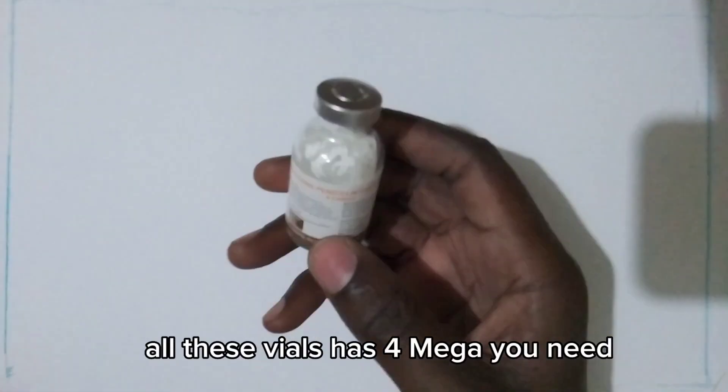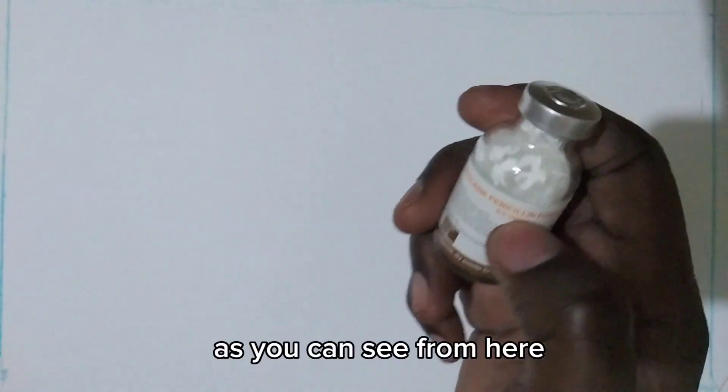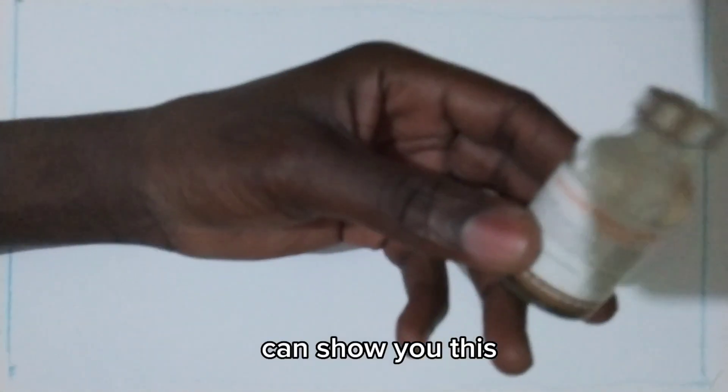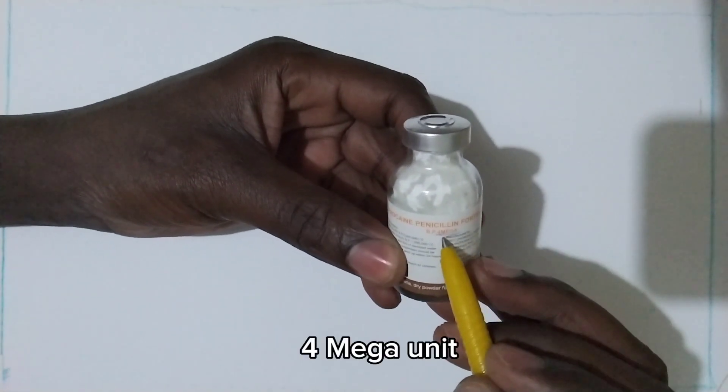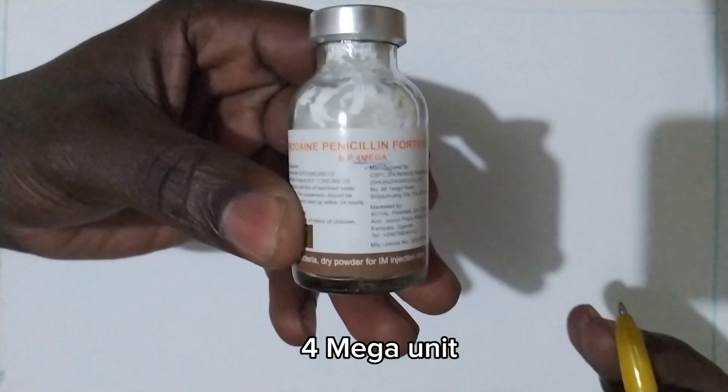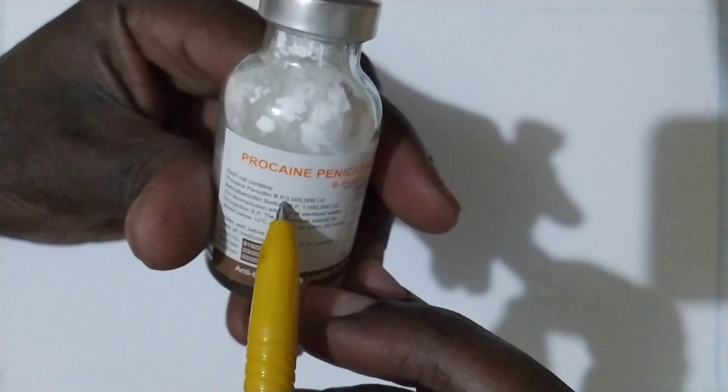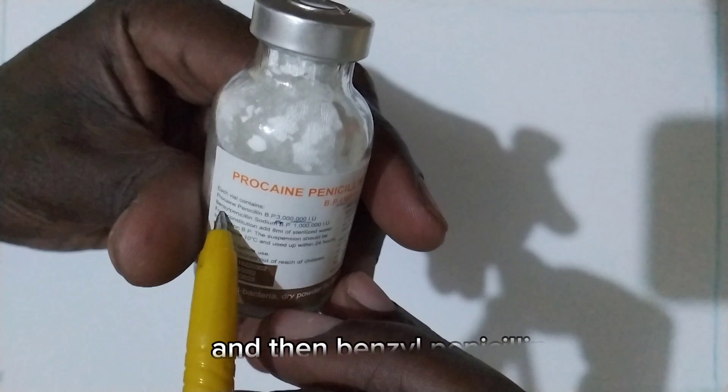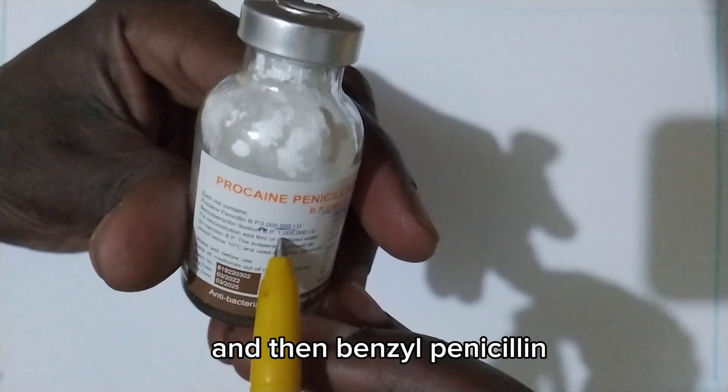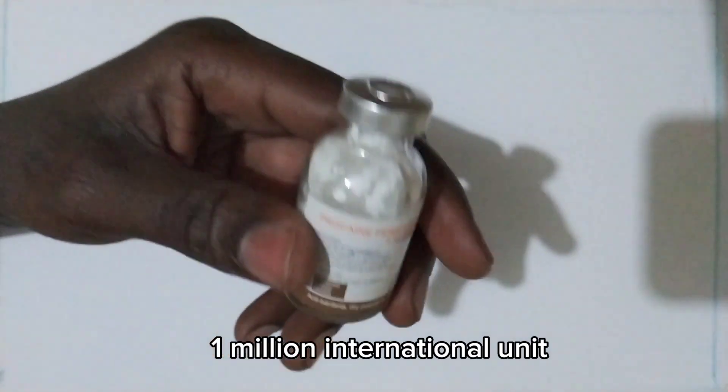All these vials have 4 mega units, as you can see from here. They contain Procane Penicillin 3 million international units and Benzyl Penicillin 1 million international units.